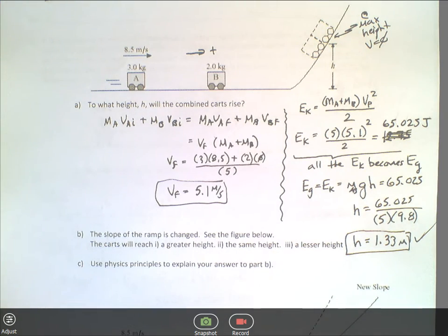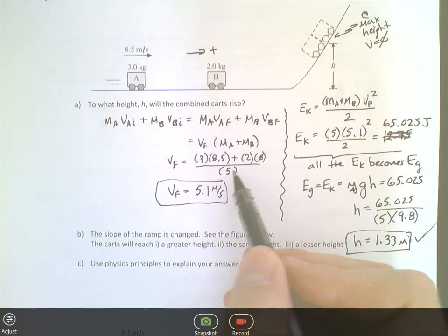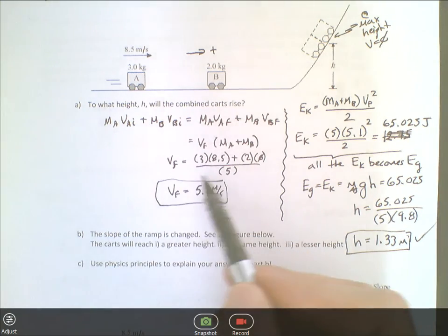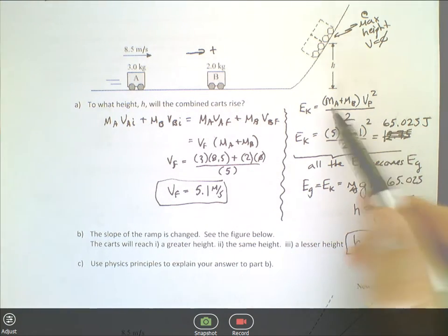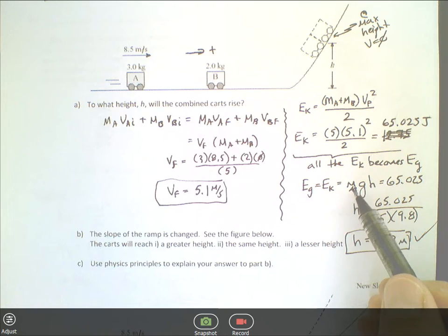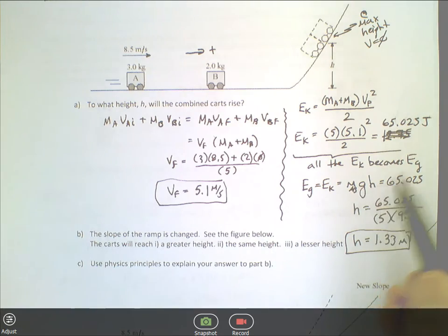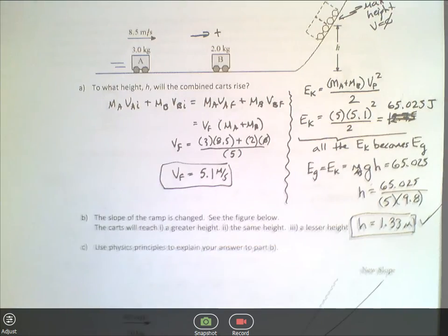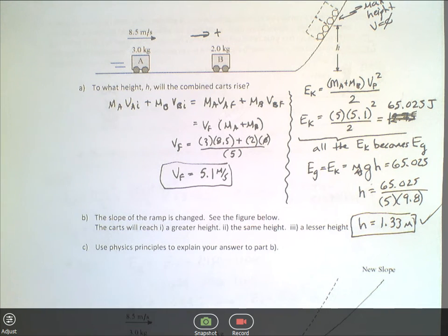Now you could have done this all algebraically. I didn't have enough space. You could have written this equation here for VF, left in the MA, VAI, all that stuff. You could have substituted it in over here and substituted all that stuff into there. You then could have set that equal to MA plus MBGH, and then rearrange and solve for H, and you could have got a nice big fancy equation that you could then write a computer program for. So that's something neat to try. If you have space or you want to give that a shot, try that out.